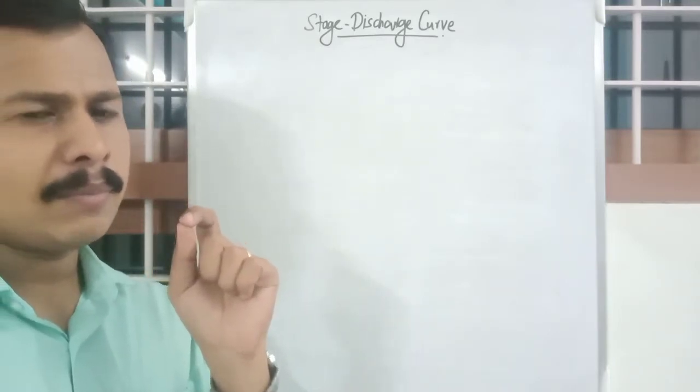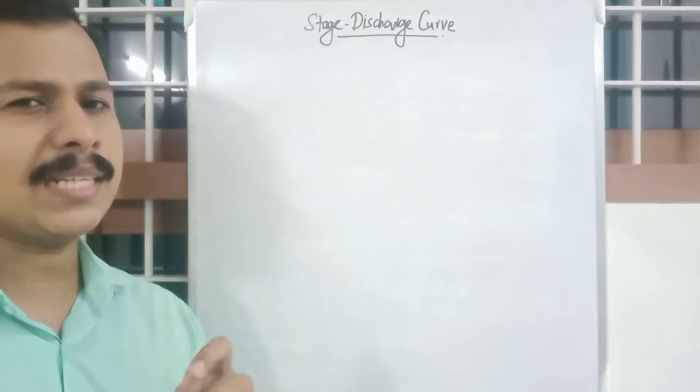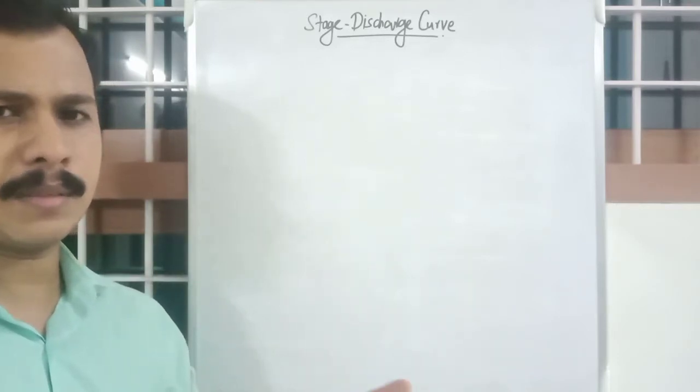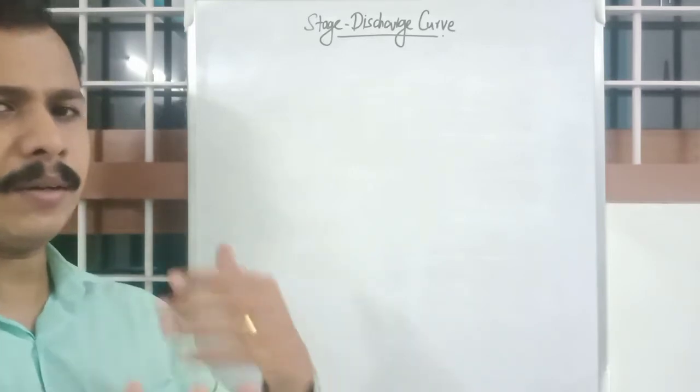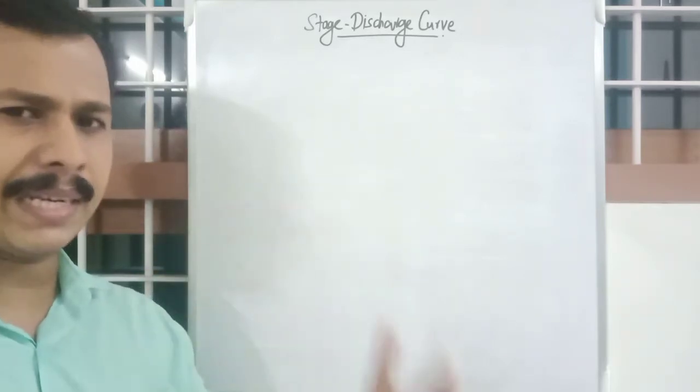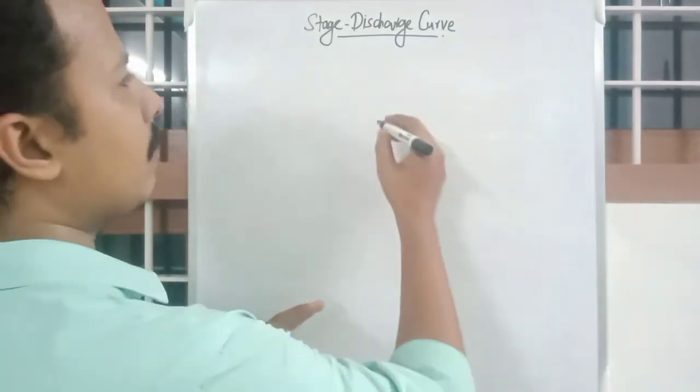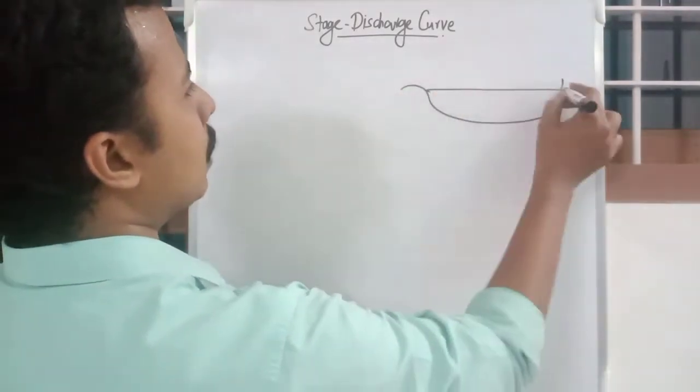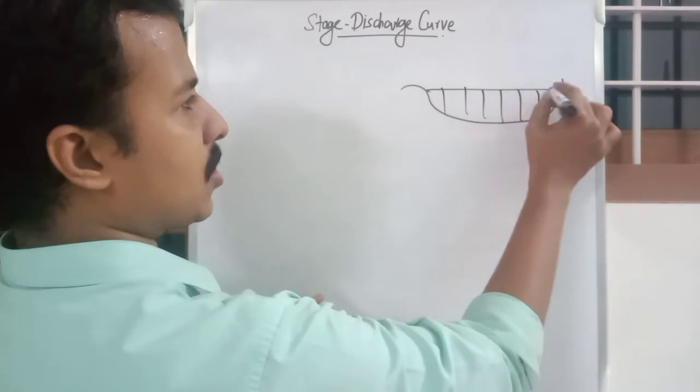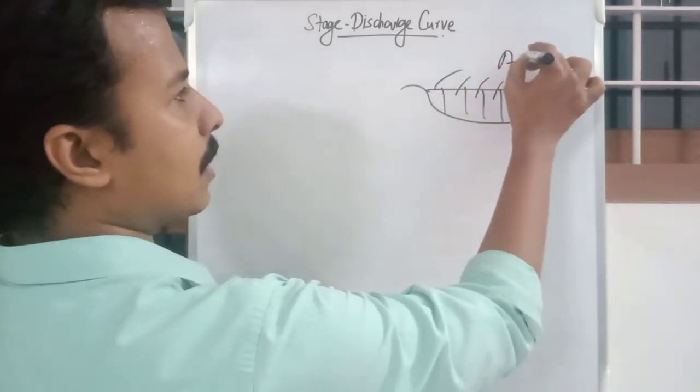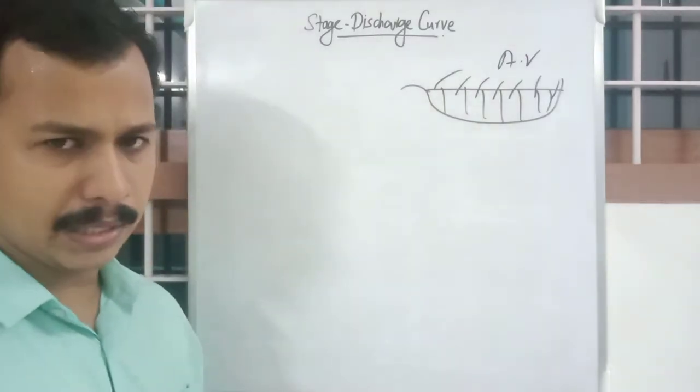The measurement of discharge in a stream is not always simple. You need to do it repeatedly and it is a very elaborate method. As we saw in area velocity method you will have to divide into many sections. You will have to calculate each of the areas and each of the velocities. It's a very elaborate method.